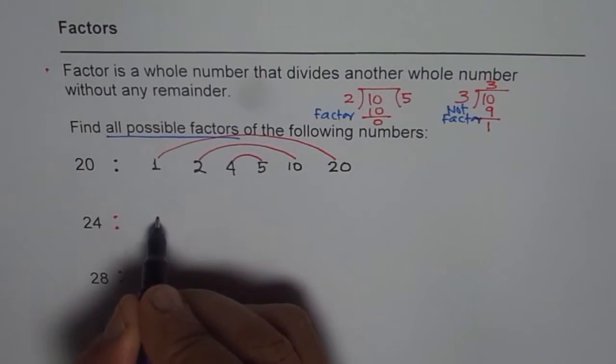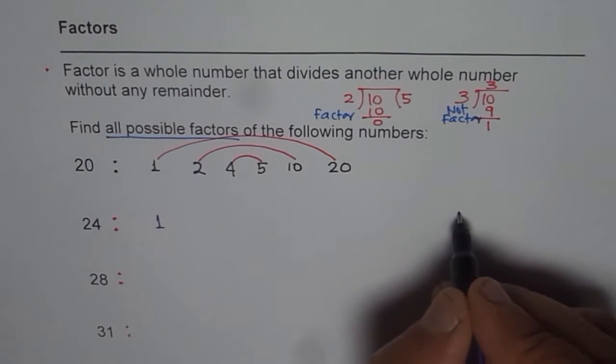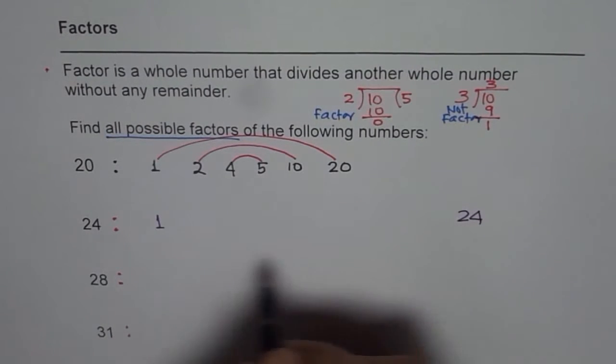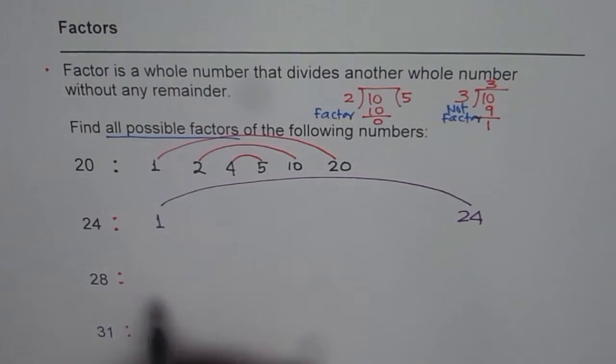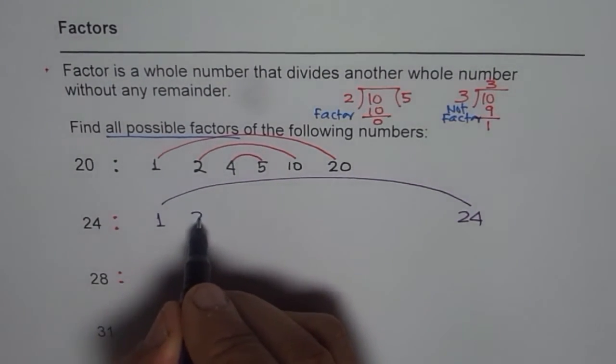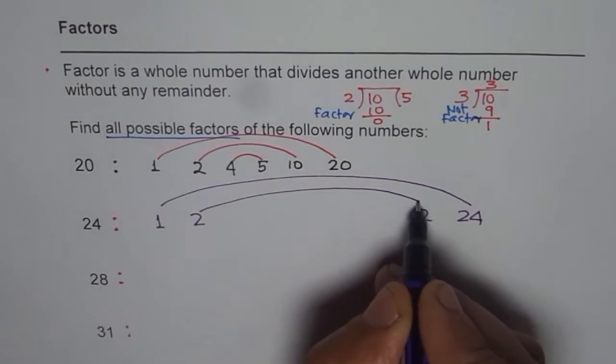24 always starts with 1, 1 times the number itself. So I'm writing it further away: 24. 1 times 24 is 24, so I get my kind of rainbow. Even number, you can divide by 2. 2 times 12 is 24.